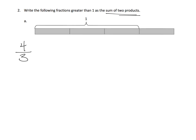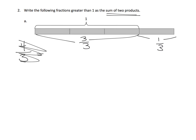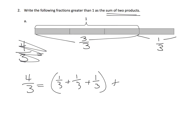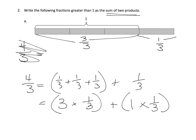If we want to write it as a sum of two products, there are a lot of ways we could do it. I'm going to say right here is three-thirds plus one-third. So I'll take four-thirds and say that is one-third plus one-third plus one-third — that's this first part — plus this last third. This is not expected as part of Eureka Math, but I want to make it obvious. That makes this three times one-third plus one times one-third. There's one way to list it as a sum of two products.